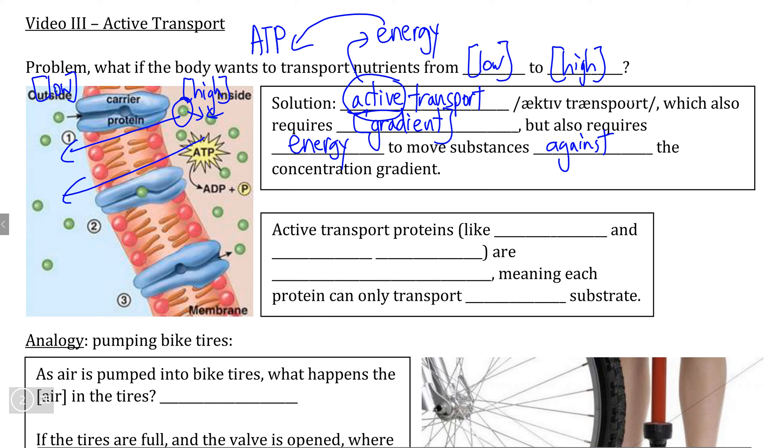In terms of the actual mechanism of active transport, we see a little bit of similarity to diffusion. If we consider the structure of various substrate-specific proteins, such as enzymes, but also carrier proteins and channel proteins, we can see that active transport proteins have the same substrate specificity.